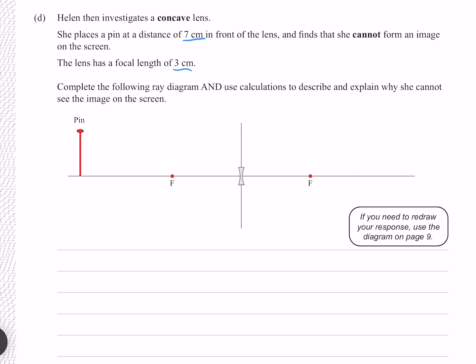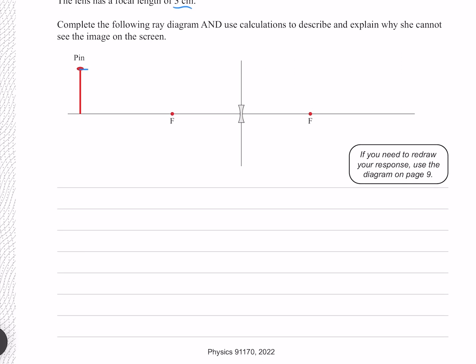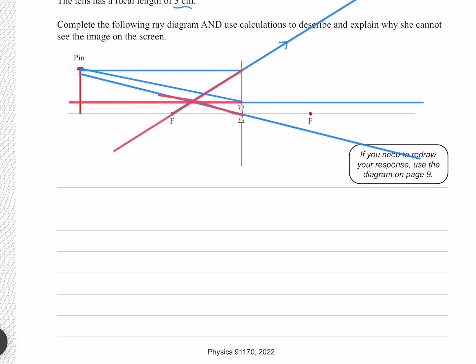Let's first complete our ray diagram. Our first ray is going to go parallel to the axis and then refract away from our focal. Our second ray is going to go straight through the middle, and our third ray is going to go toward the focal on the other side and then refract parallel. As we can see, our rays are diverging, meaning we need to backtrace virtual rays, giving us an image right here.